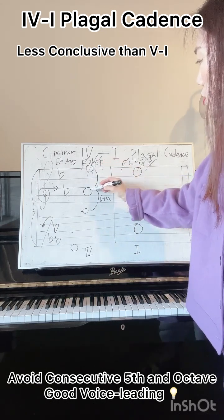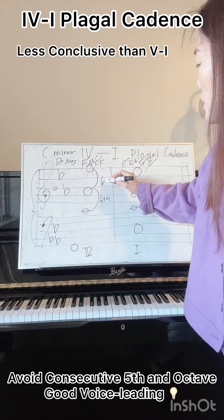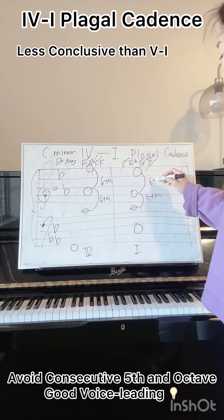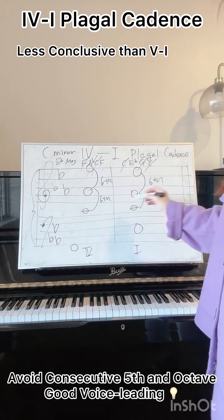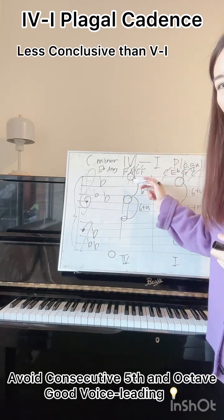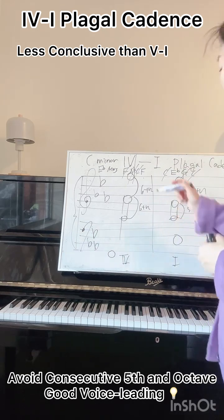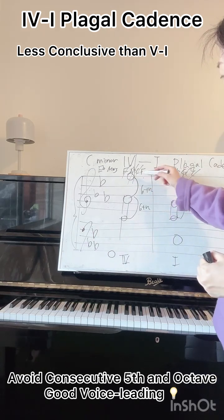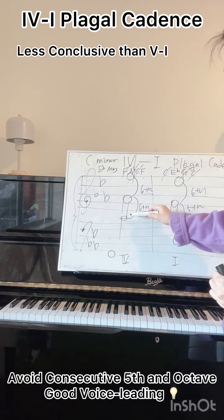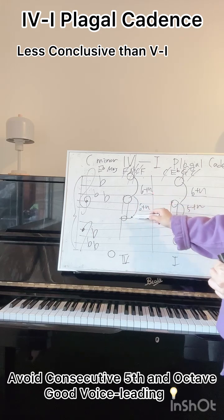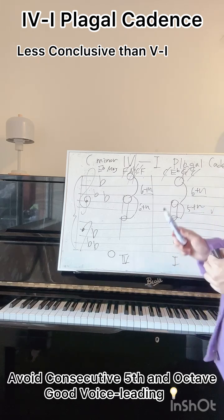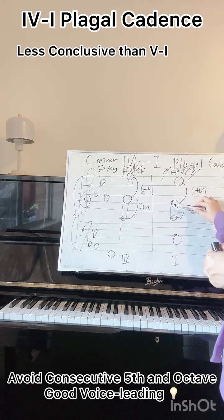Let's check the interval between these two: A to F, which is a sixth, followed by G — A, B, C, D, E — also a sixth. So there is no consecutive fifth and octave. Please check carefully in your four-part vocal style. A to F is a sixth, G to E is a sixth, and C to A is also a sixth, followed by a fifth. So these are all good. Make sure that a fifth interval is not followed by another fifth.